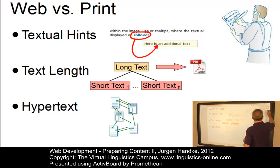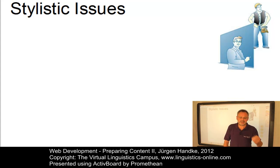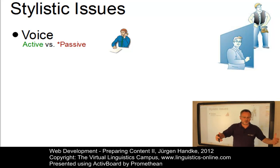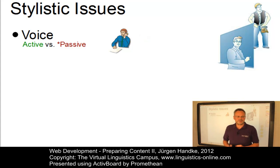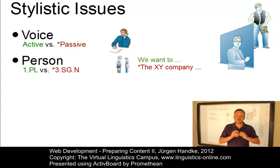The next problem we have to solve concerns stylistic issues. Maintaining consistency in the writing style improves the consistency of the site as a whole. In general, the style used should derive from an extensive user analysis. For example, one question concerns the voice that is used — the active voice should be preferred to the passive voice. The example 'we offer the following services' creates a higher degree of familiarity than the passive counterpart 'the following services are offered.' The second stylistic variable concerns the choice of person — the first person plural creates more familiarity than the third person. 'We want to provide you with the best software' sounds much more familiar than 'the XY Corporation provides you with the best software.'